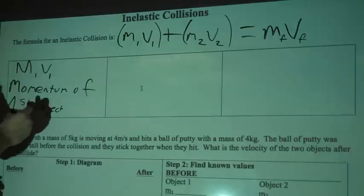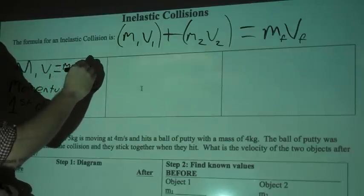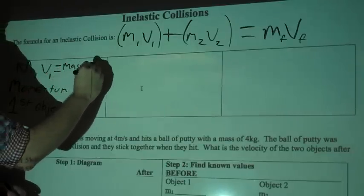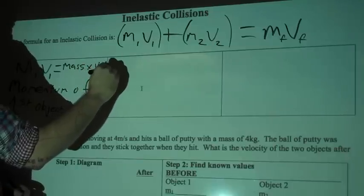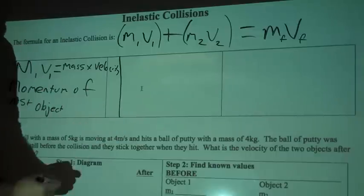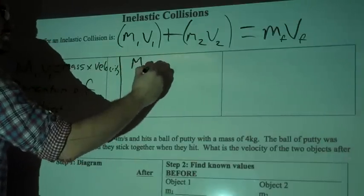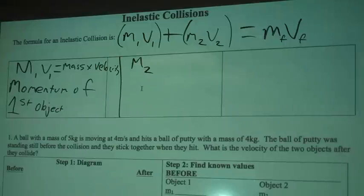So m1 and v1, this equals mass times velocity. All right, the second one, mass 2, and I'll move over so you guys can see that. So the momentum of the first object - remember, momentum is mass times velocity.